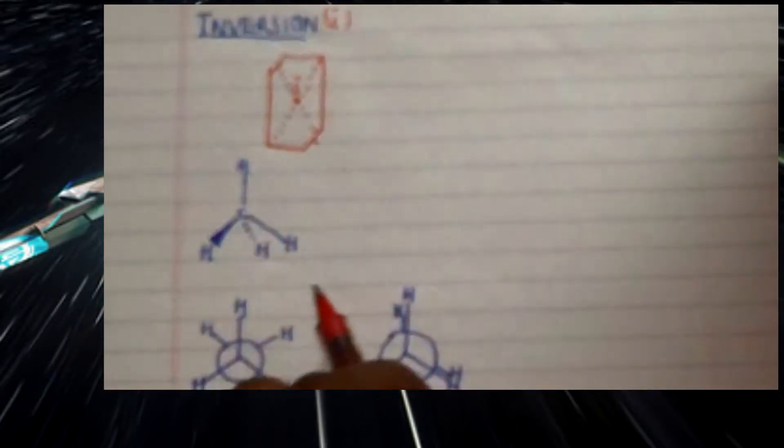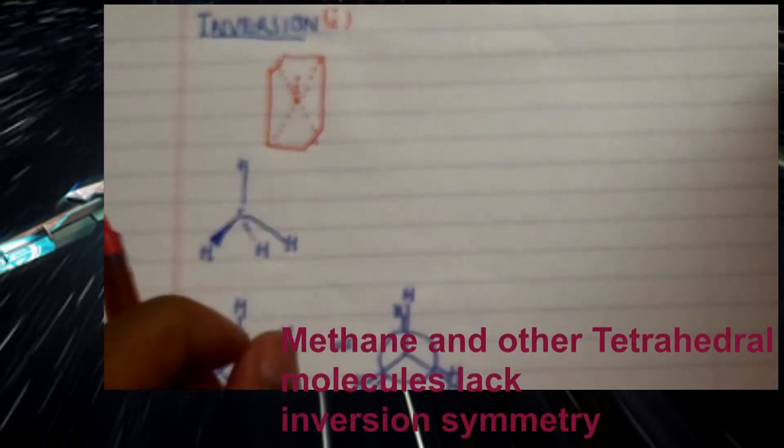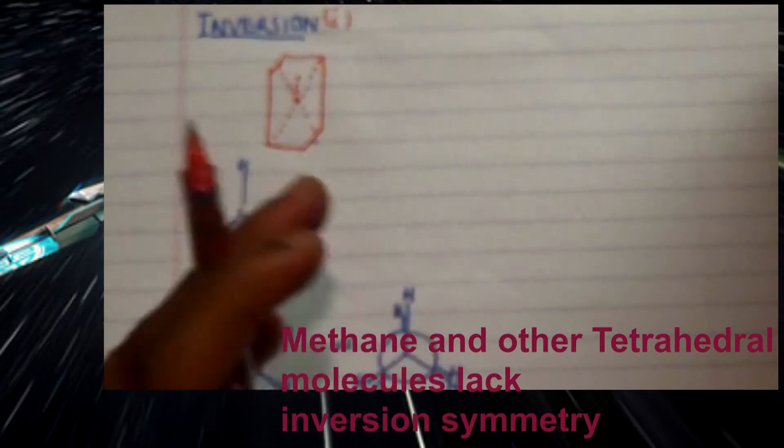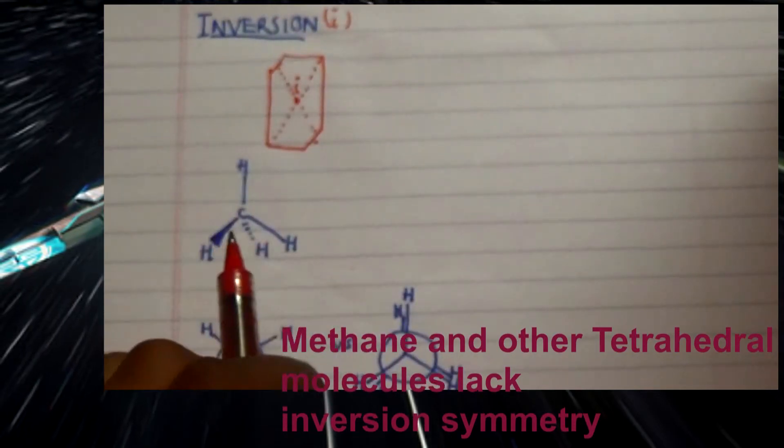Now one important thing we need to take note, for example, is that looking at this particular molecule, which is methane, and other tetrahedral molecules, they do lack inversion center.